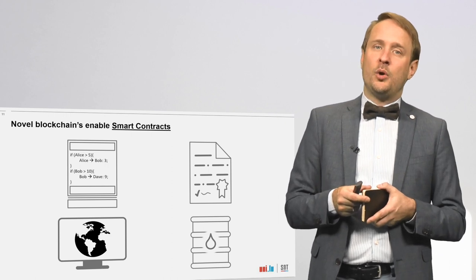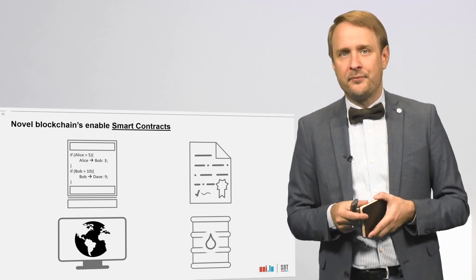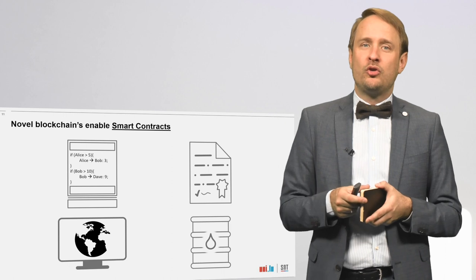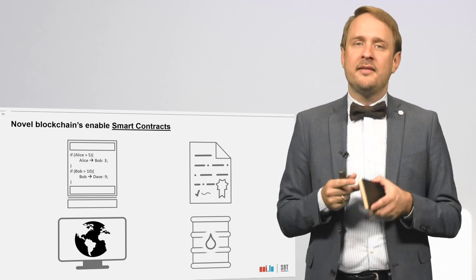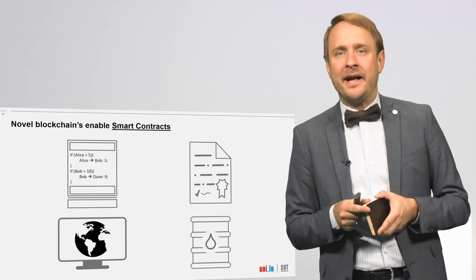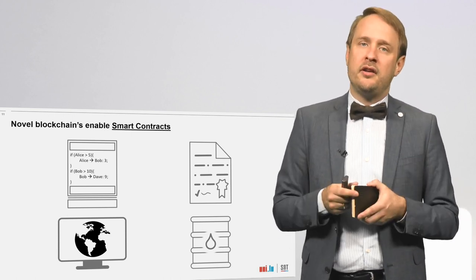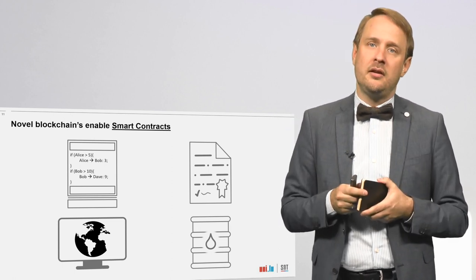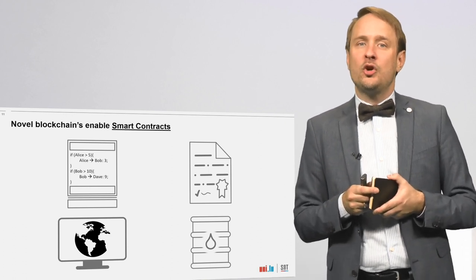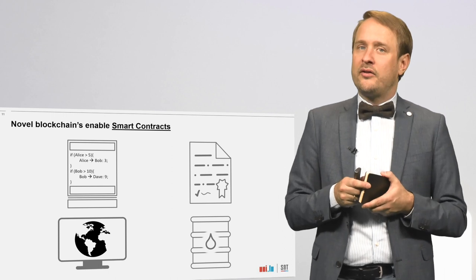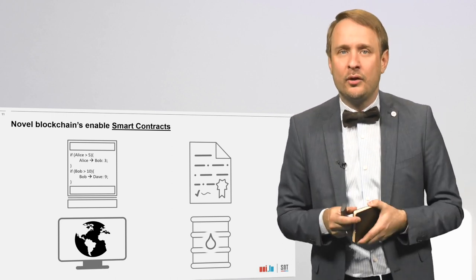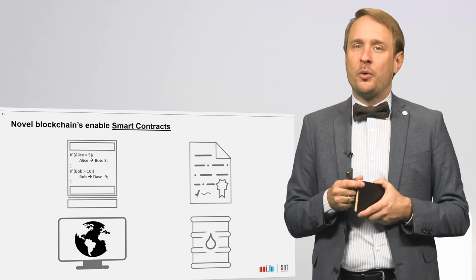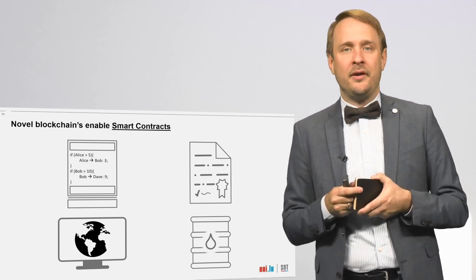Obviously, this world computer needs to be operated in some way — and not for free, otherwise some people might have funny ideas of what to do with it. Thus, all smart contracts require a small fee. For Ethereum, this fee is paid in Ether, Ethereum's cryptocurrency. However, since Ethereum does not want to build a world currency, you can consider Ether to be more like an operating resource — similar to a barrel of oil in the real world. Both are traded on liquid markets and can be bought and sold very easily.